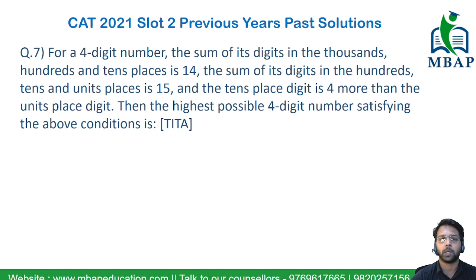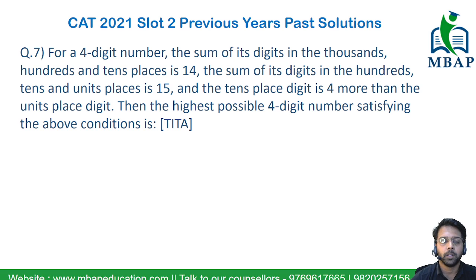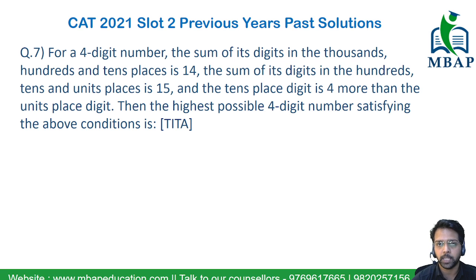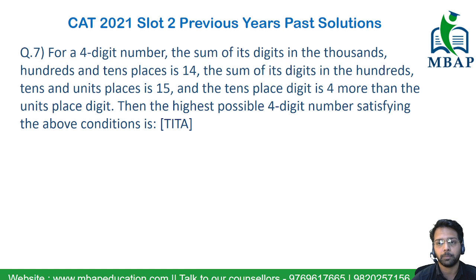Let's have a quick reading of the next question. For a four-digit number, the sum of its digits in the thousands, hundreds, and tens place is 14. The sum of the digits in the hundreds, tens, and units place is 15. And the tens place digit is 4 more than the units place. Find the highest possible four-digit number satisfying the given conditions.